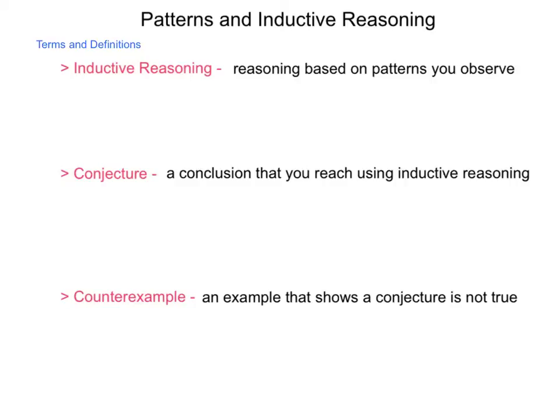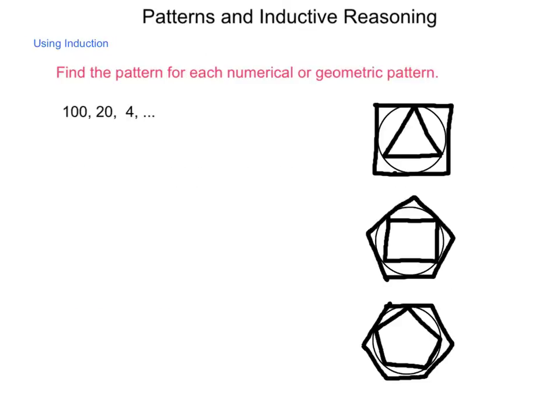But if you go by and that police officer ended up not giving the person a speeding ticket, then that would be a counterexample to what you had concluded. Now, as we go through and work with our patterns and inductive reasoning, we're going to be spending time looking at numerical and geometric patterns as part of this. So let's begin looking at some of these and seeing what we can find, what conjecture we can reach.